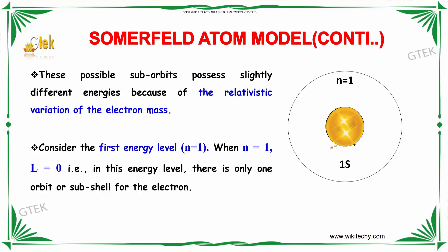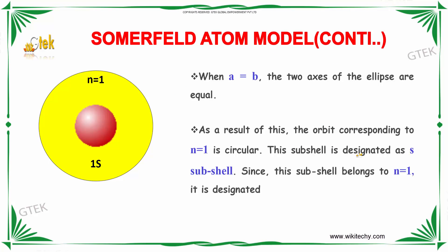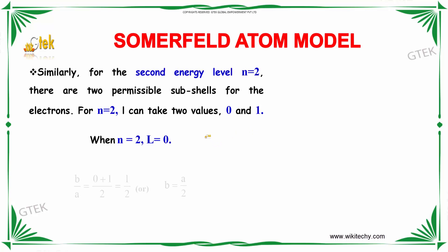Consider the first energy level, n=1. When n=1, the value L is equal to 0. In this energy level, there is only one suborbit or subshell for the electron. Using the equation n=1 and L=0, we get b=a. The two axes are equal, which indicates the orbit is circular. The subshell is designated as 1s.